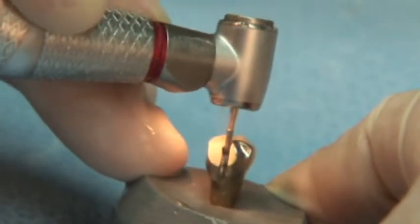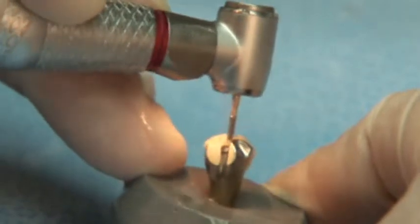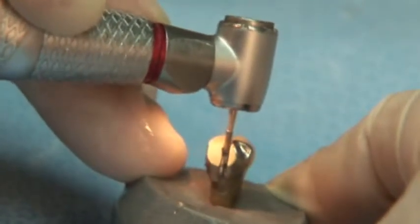Clinicians love the fact that with the Great Whites, they no longer go through two or three burrs to remove an old crown.